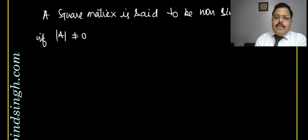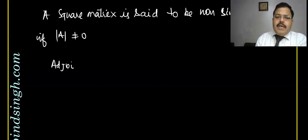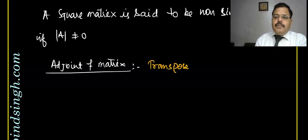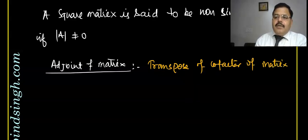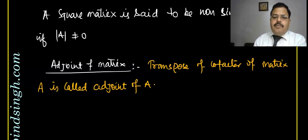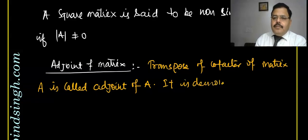Now we have to learn about the adjoint of a matrix. What is the adjoint of a matrix? The transpose of the cofactors of matrix A is called the adjoint of A. It is denoted as adj(A).